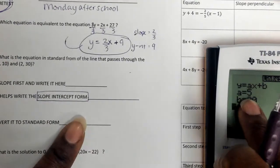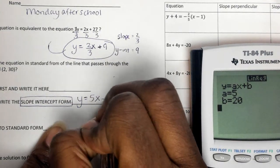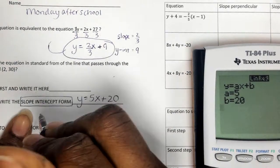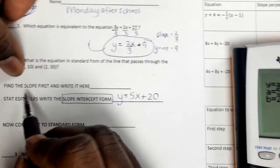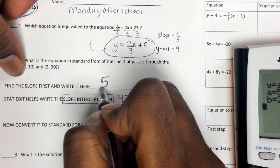It tells me that my slope, which is the A, so that's y equals 5x plus 20. This is my slope-intercept form. Notice it says find the slope first and write it here. The slope is 5.